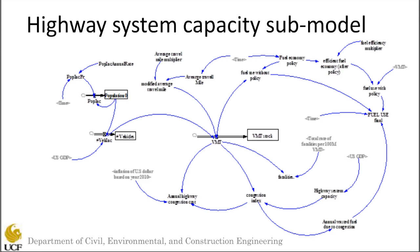The next sub-model is the Highway System Capacity sub-model, which presents a more holistic view of the problem by concentrating on parameters like population, number of vehicles, VMT, vehicle fuel usage, and traffic congestion.